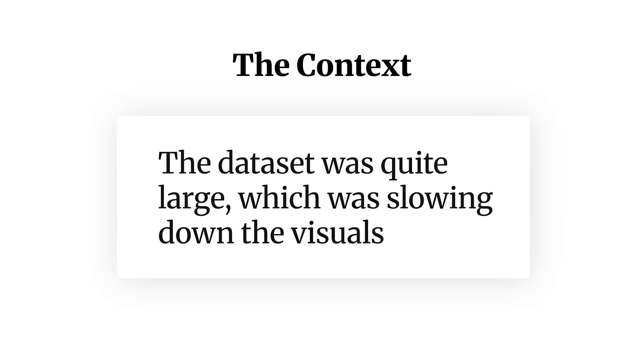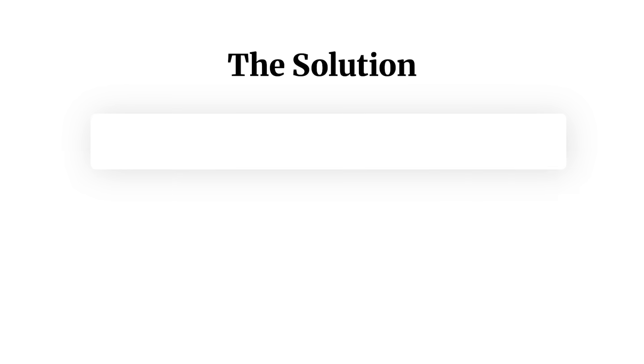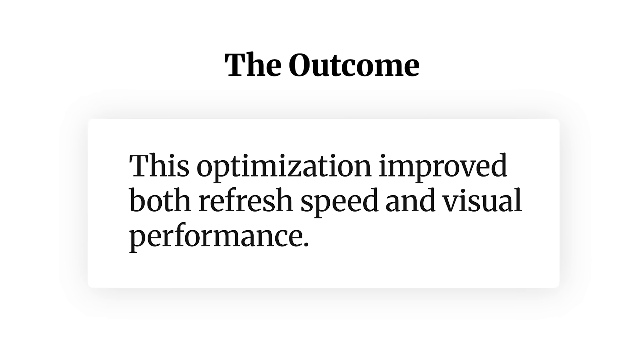A good way to talk about architecture is to give context first. For example: the data was really large, visuals were slow, the model was getting heavier. You identified that people only use the last two years of data for about 90% of decisions. So instead of loading all seven years, you built a rolling model that captures only the two most recent years, summarizes it, and runs calculations on top of that — the result being a faster model, faster refreshes, and visuals that load much quicker.